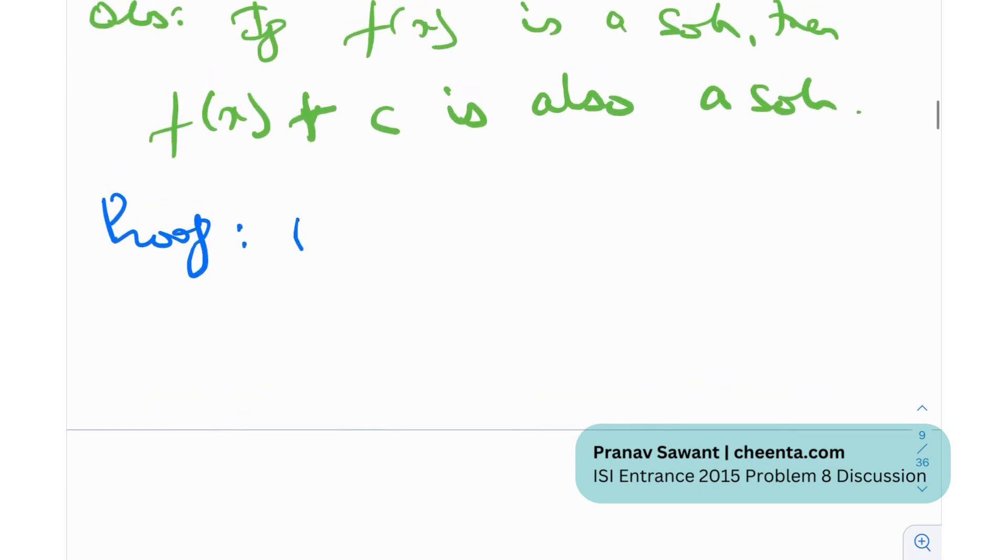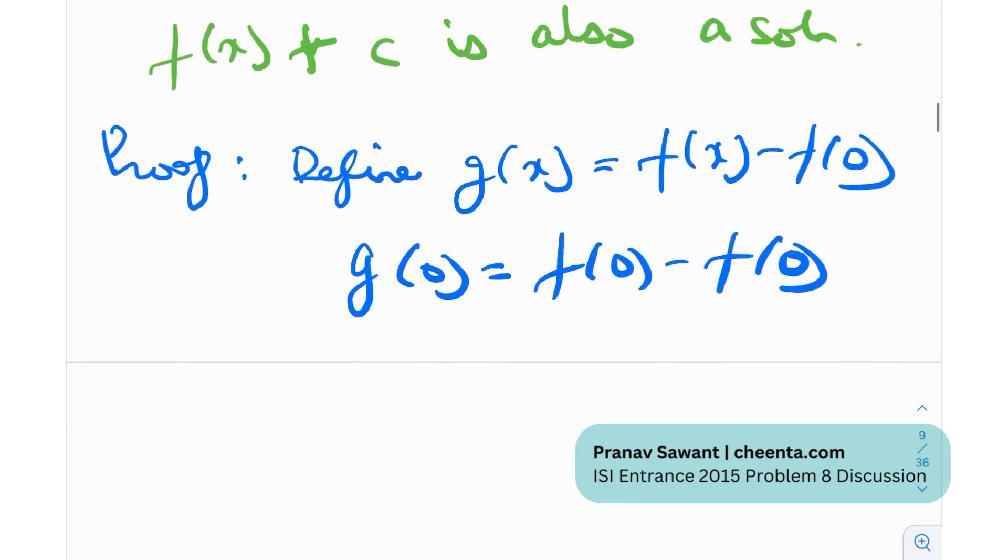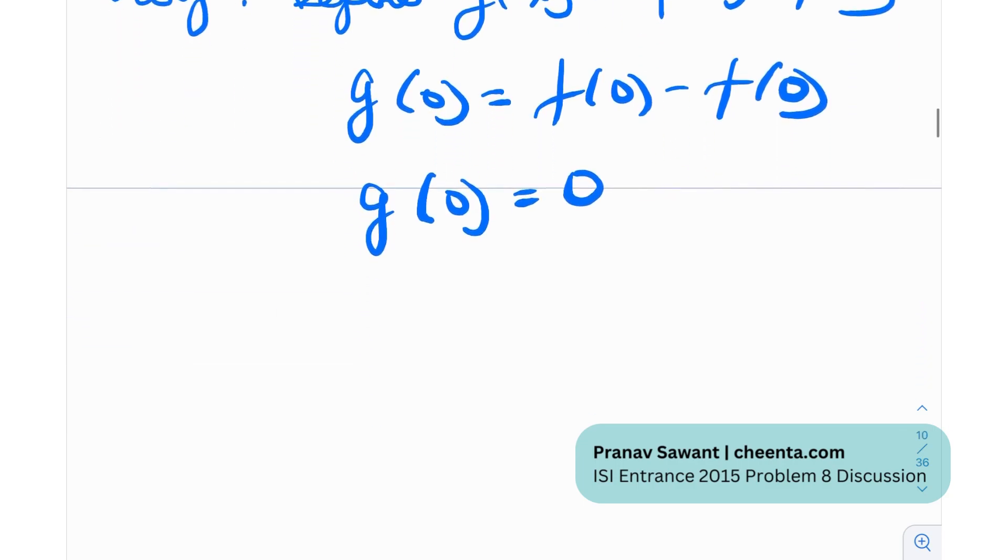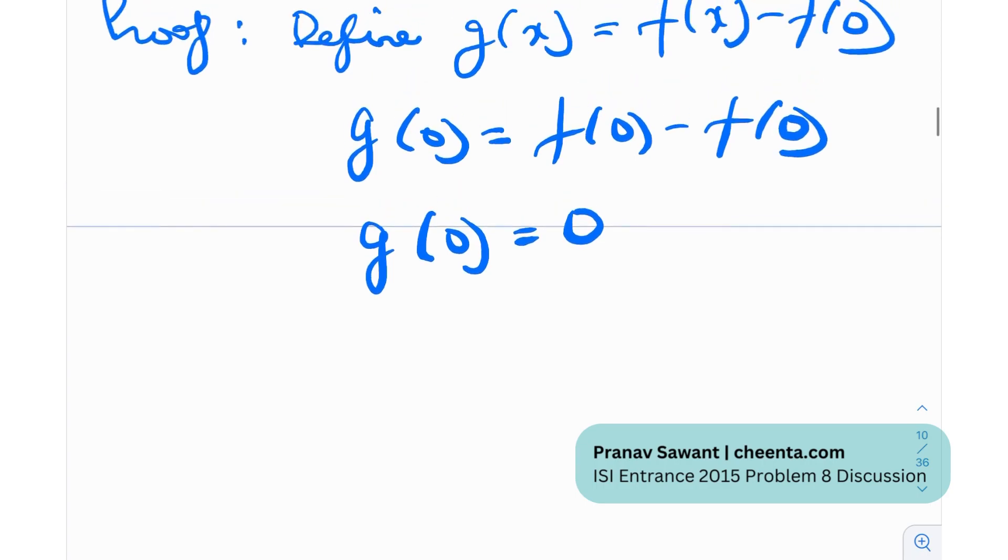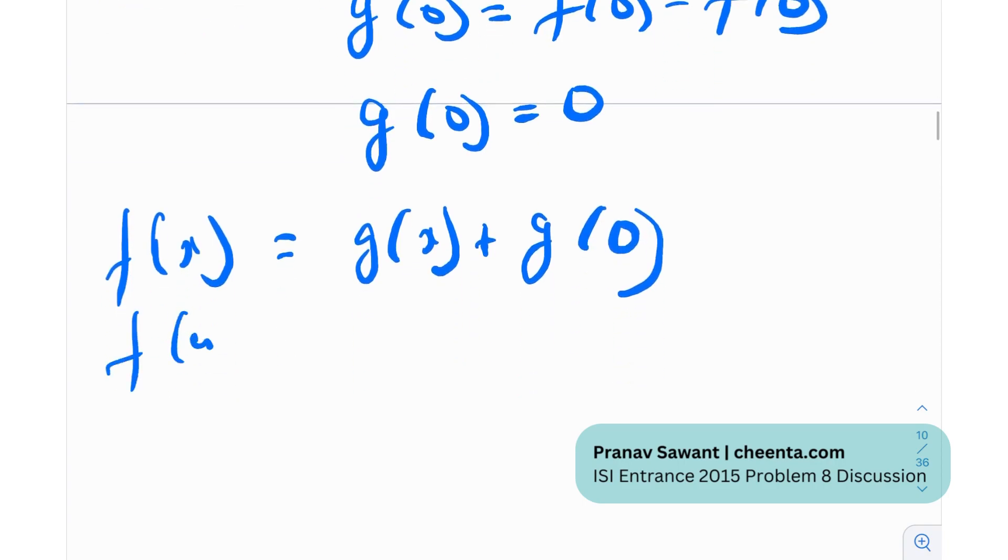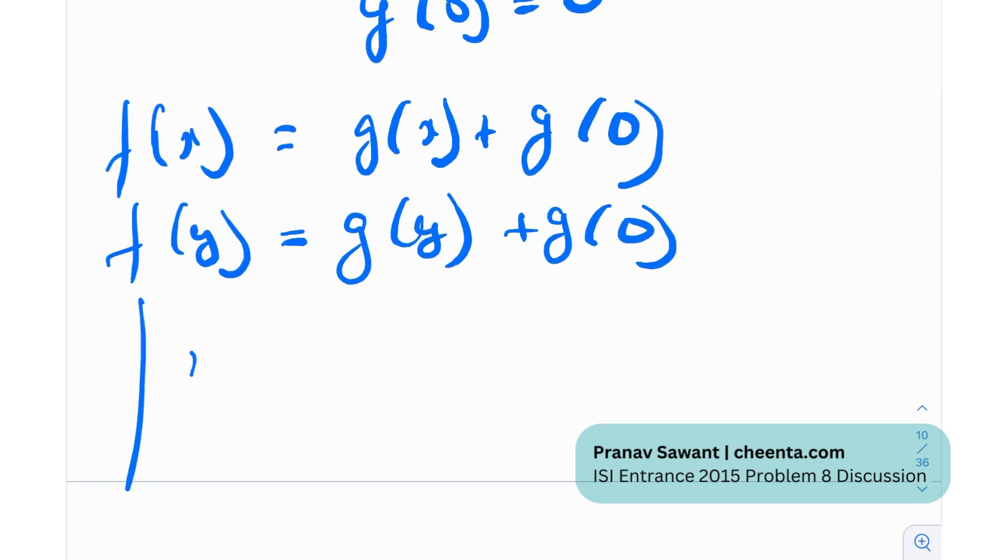So proof... Now what I'm going to do is I'm going to define g(x) is equal to f(x) minus f(0). So if I plug in x equal to 0 over here, I'll get g(0) is equal to f(0) minus f(0). So g(0) is 0. Now what do we have over here? So f(x) is essentially g(x) plus f(0). What is f(y)? It will be nothing but g(y) plus f(0). So f(x) minus f(y) will be nothing but g(x) minus g(y) because these two things will be cancelled, equal to twice mod x minus y.